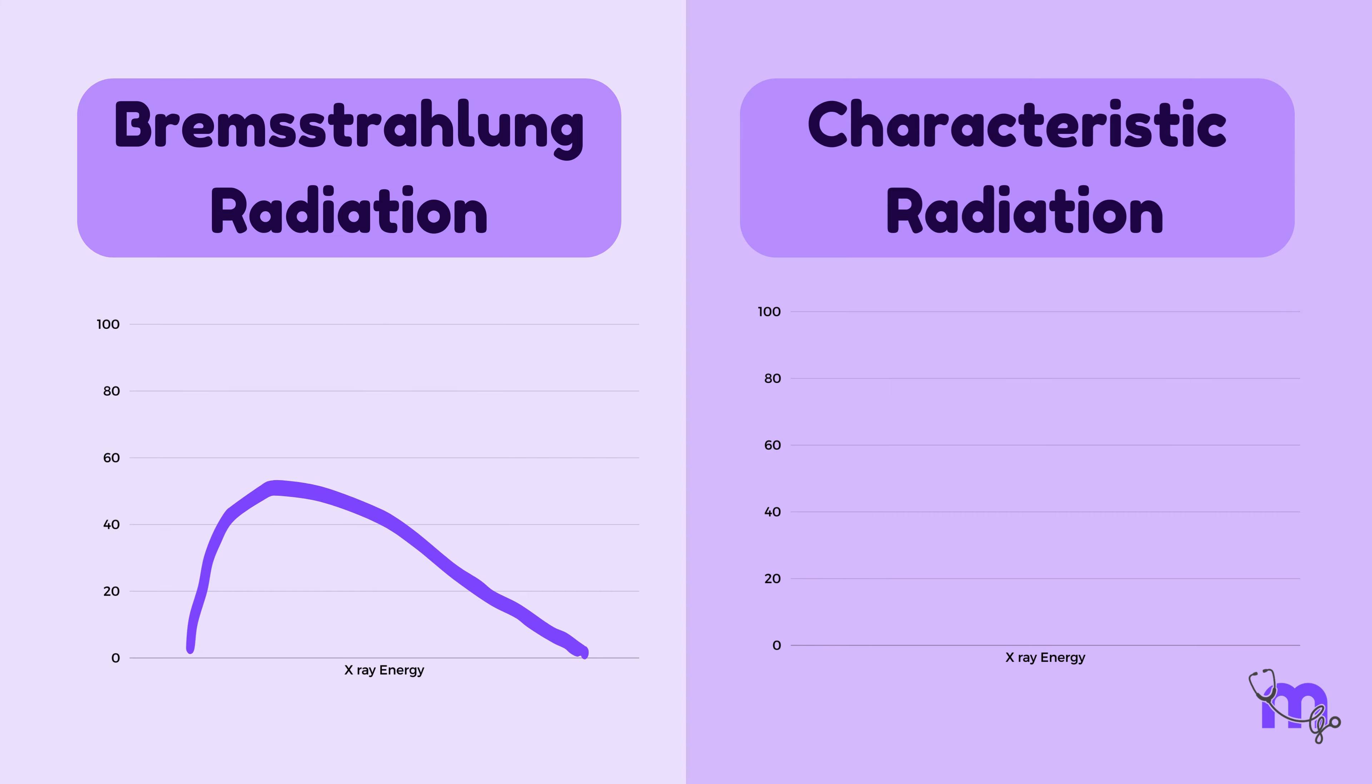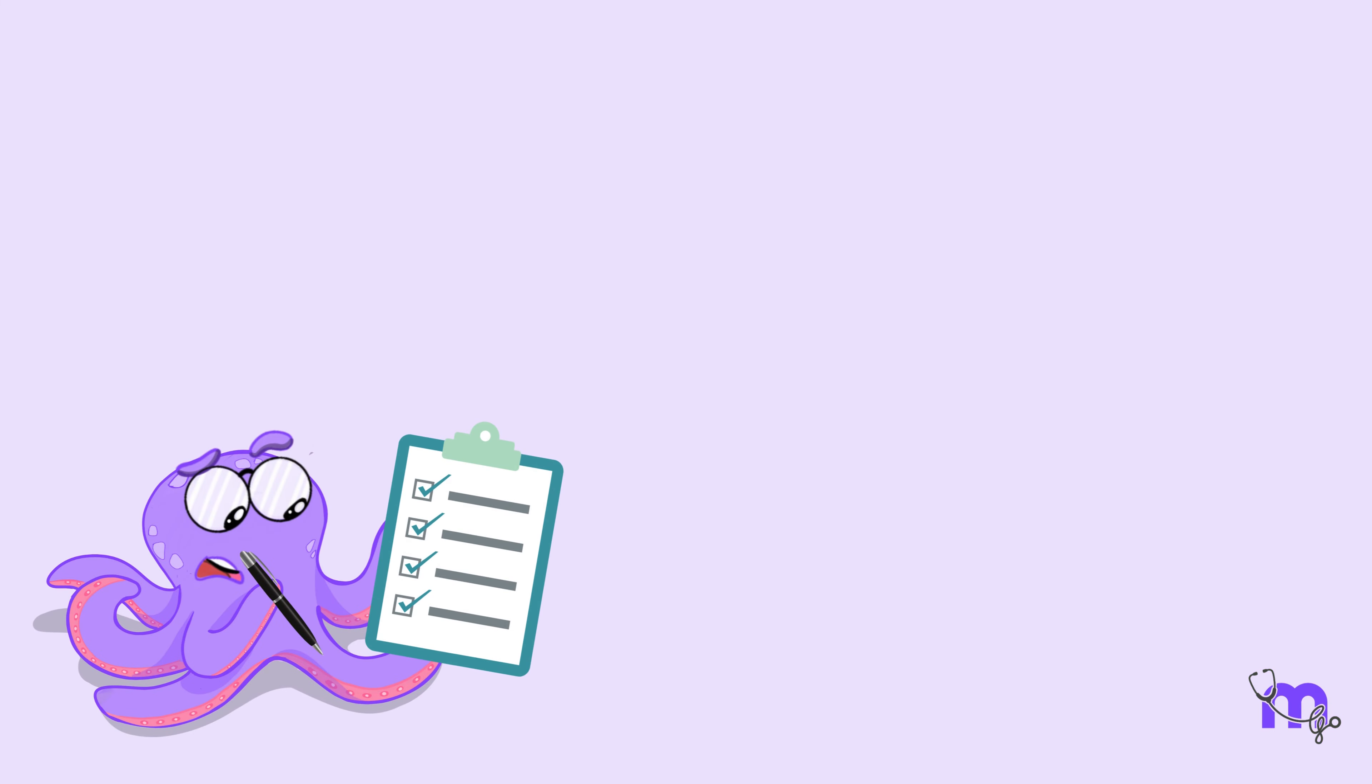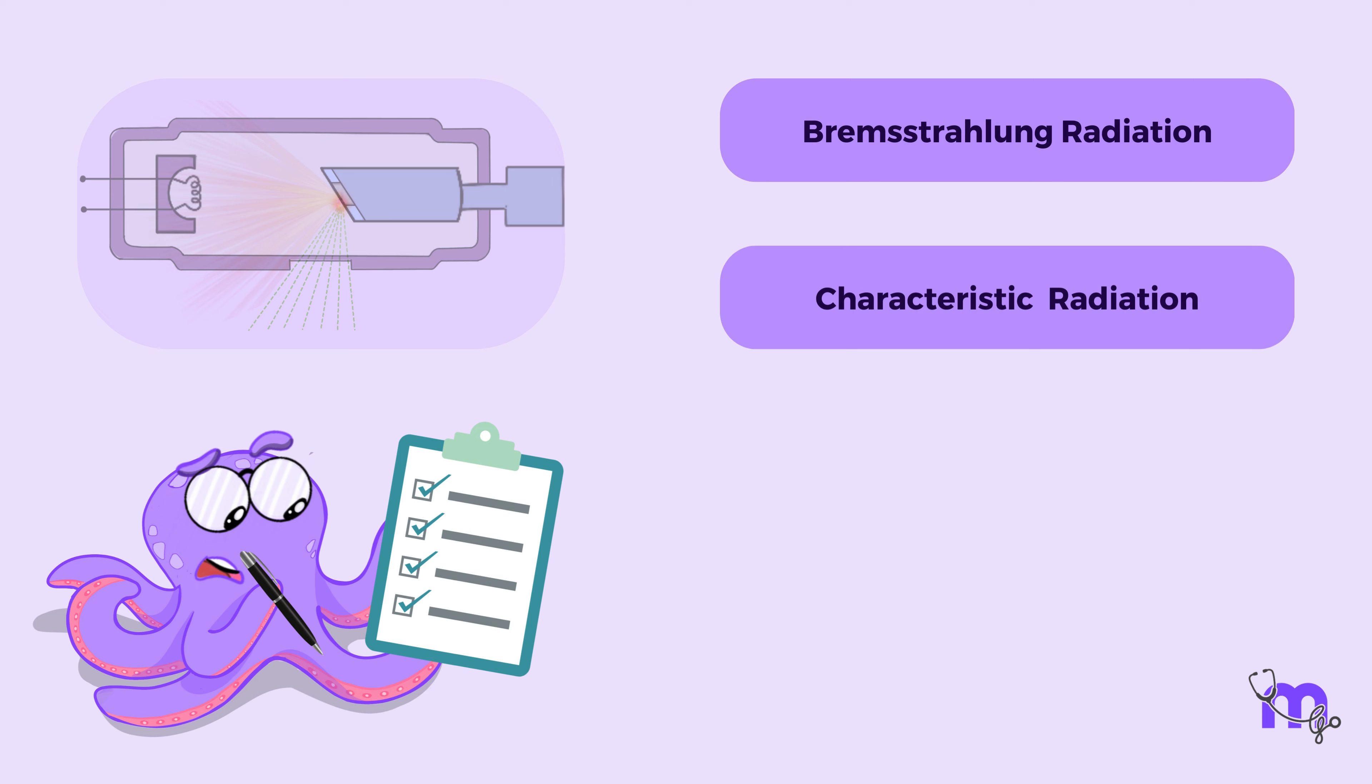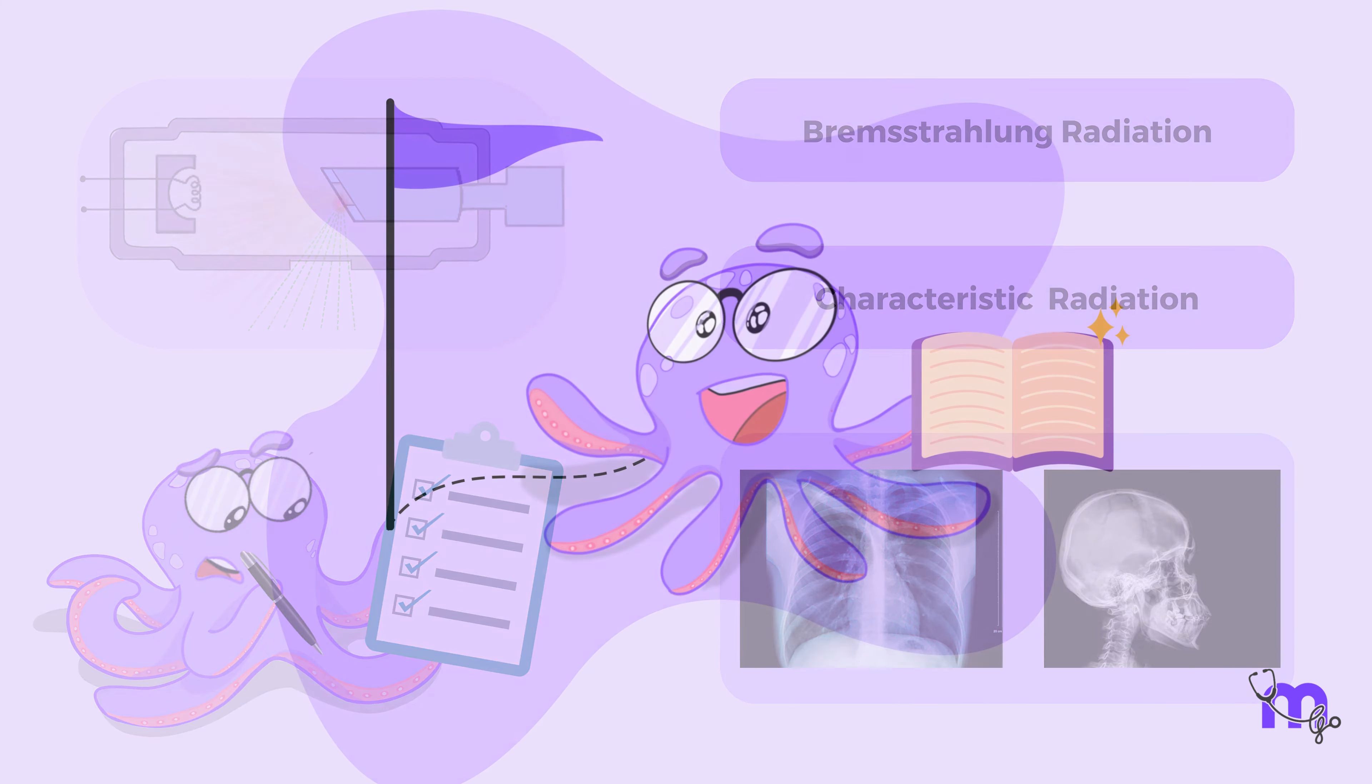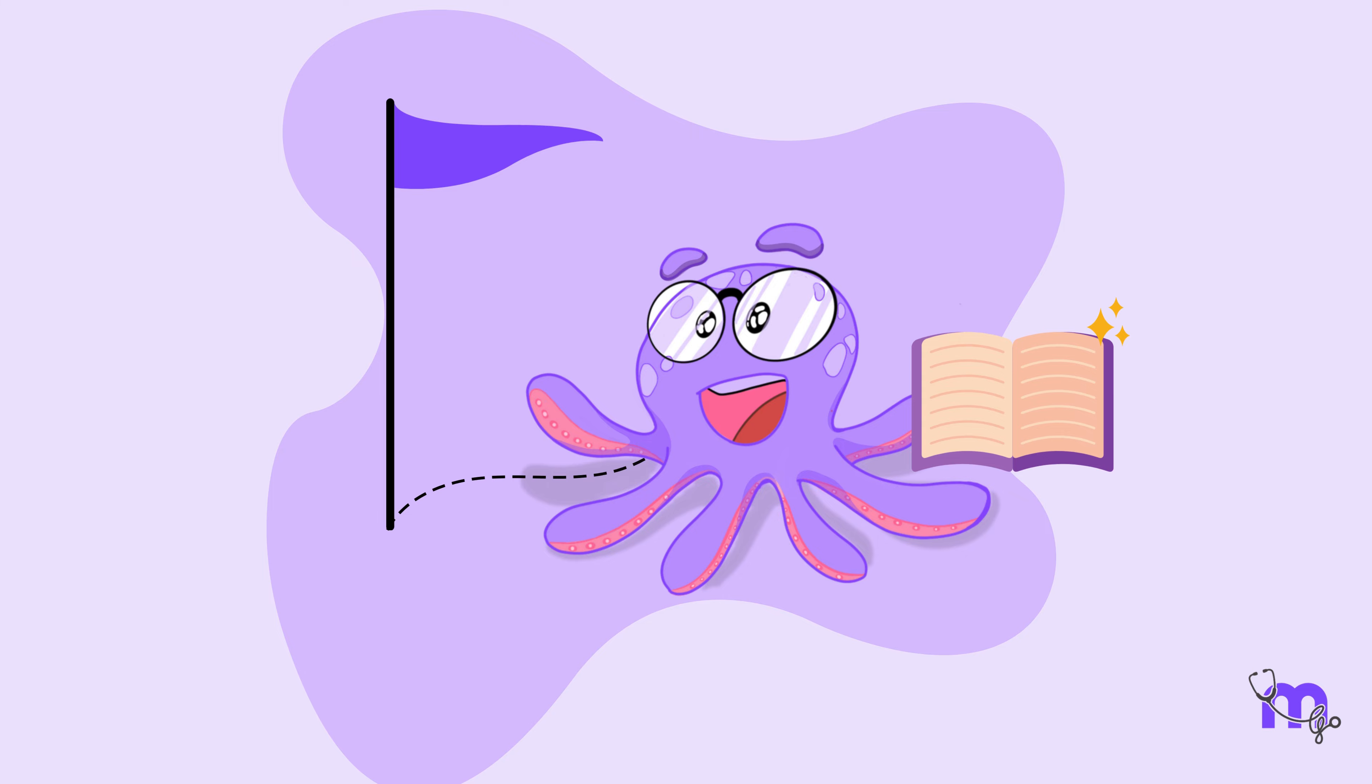Bremsstrahlung radiation produces a continuous spectrum of energy, while characteristic radiation produces discrete packets of energy. Understanding the production of X-ray photons and the characteristics of Bremsstrahlung and characteristic radiation is crucial for the safe and effective use of X-rays in medical and dental imaging. This brings us to the end of our video. We hope you had fun learning with us!